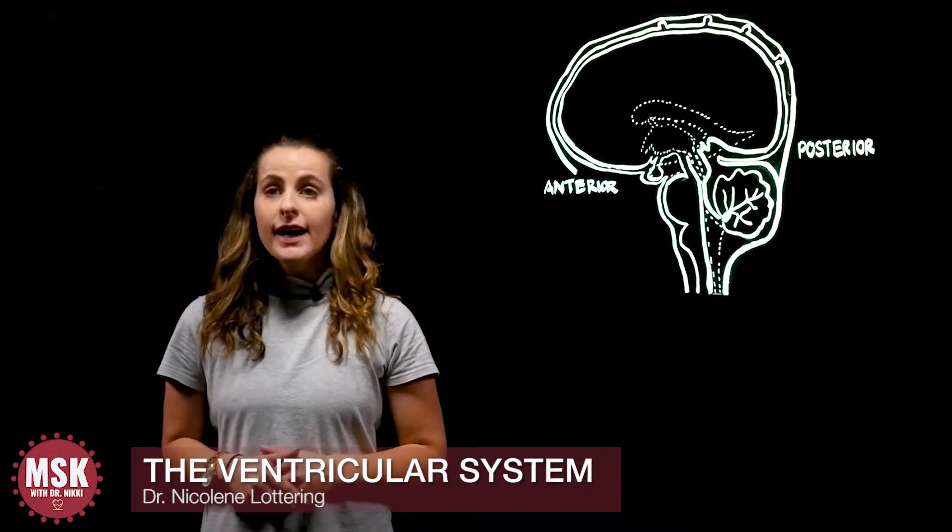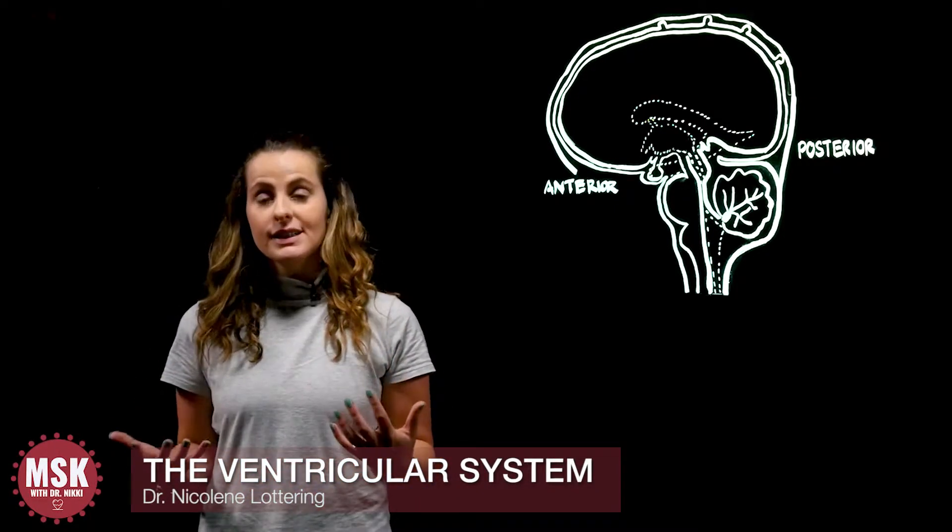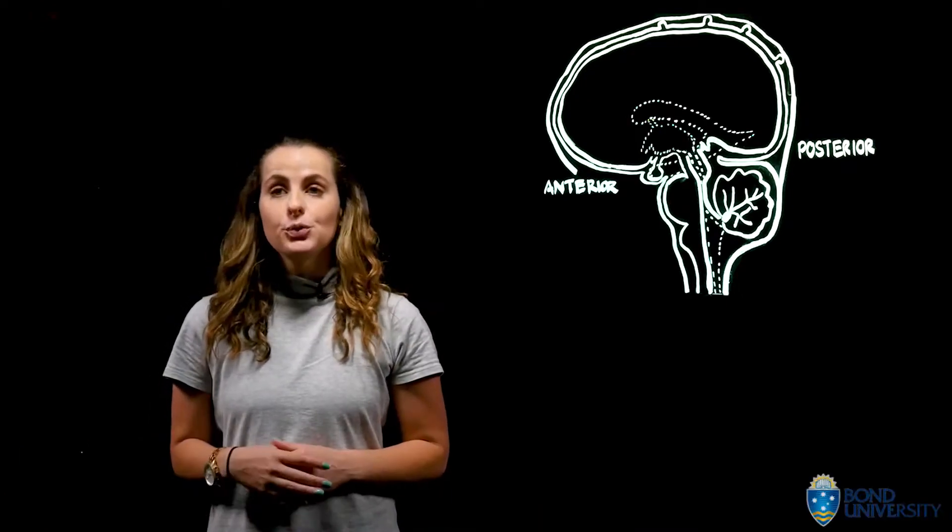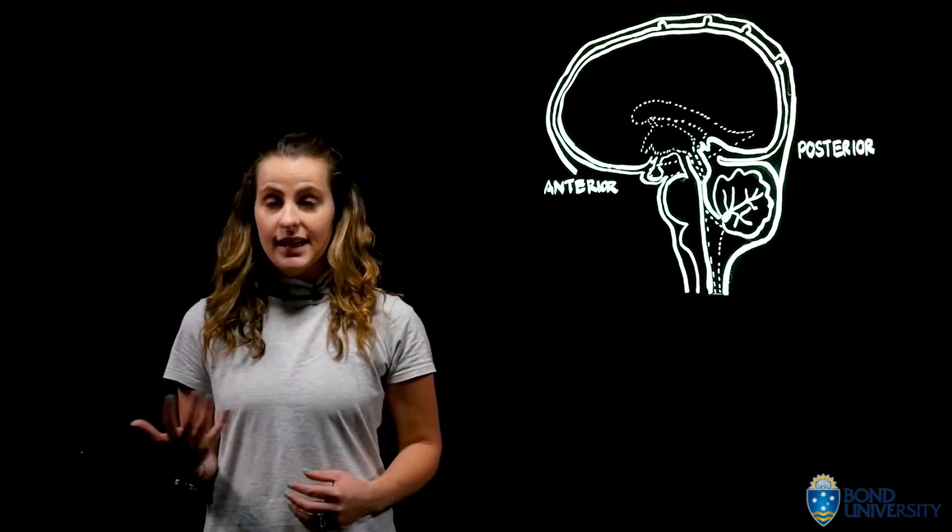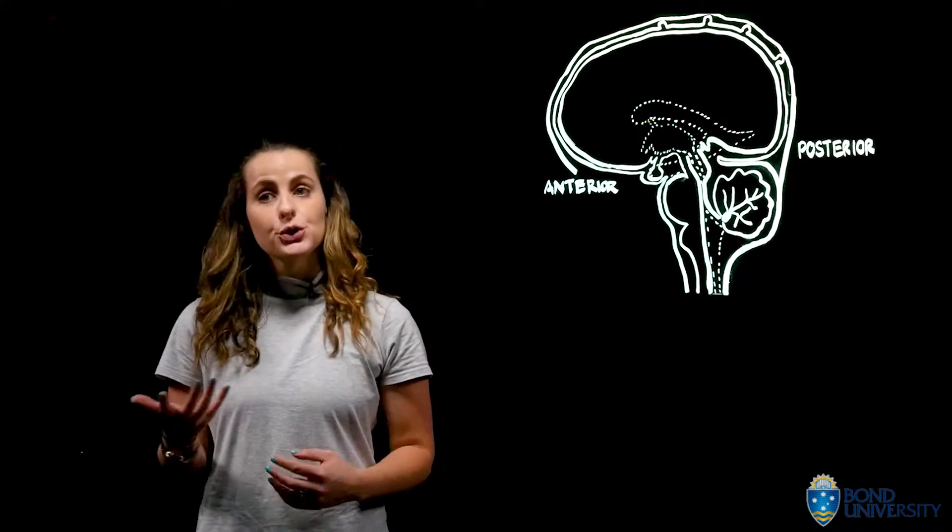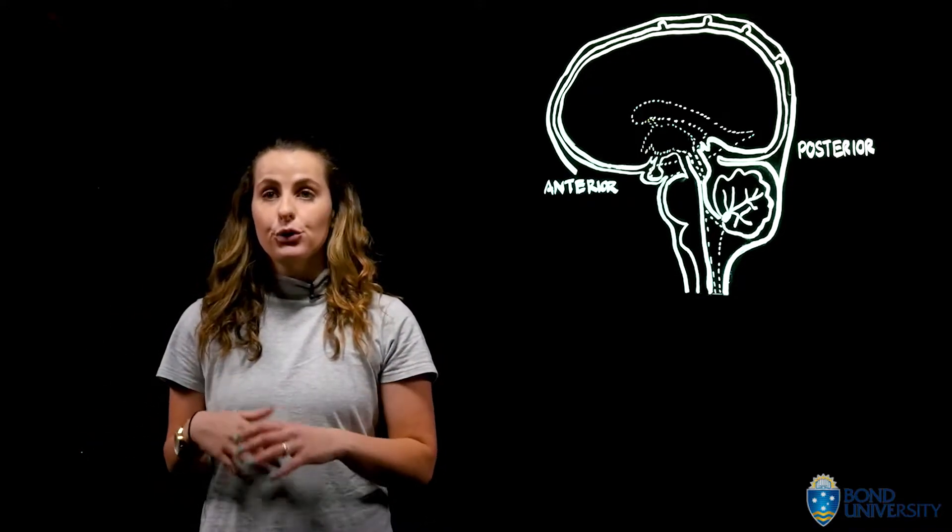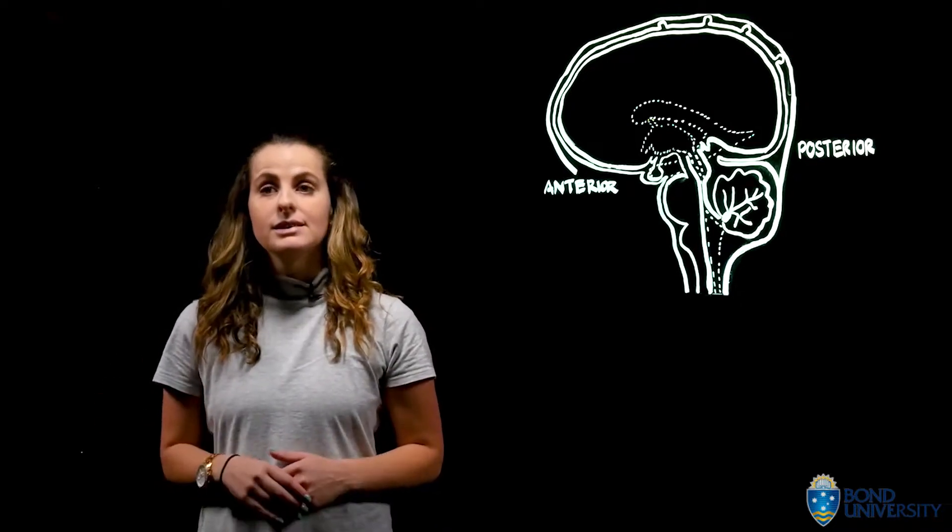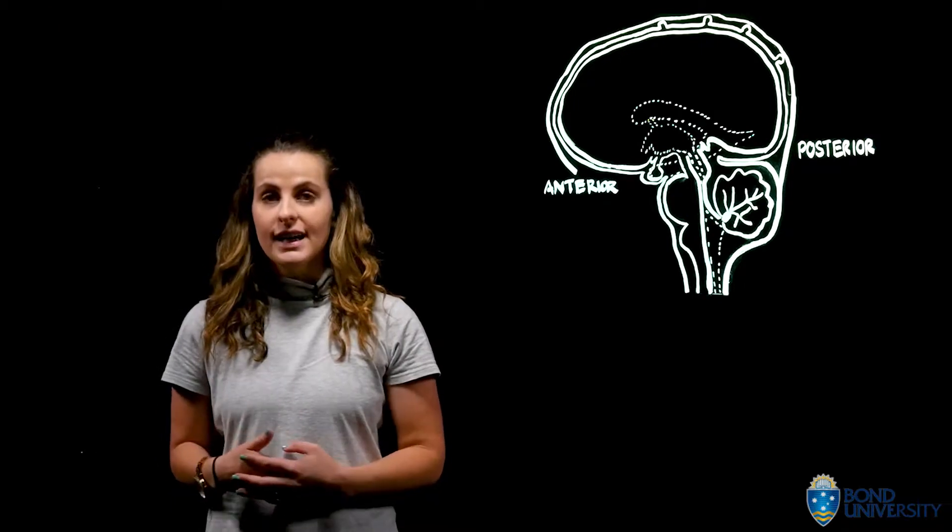The aim of this lightboard video is to provide you with an overview of the ventricular system of the brain, which is where cerebral spinal fluid, CSF, is produced and disseminated from the lateral ventricles flowing all the way through and around the subarachnoid space, and then entering back into the venous blood system via the superior sagittal sinus.